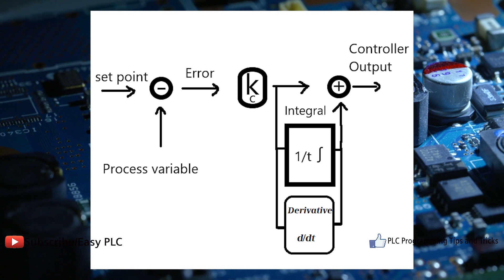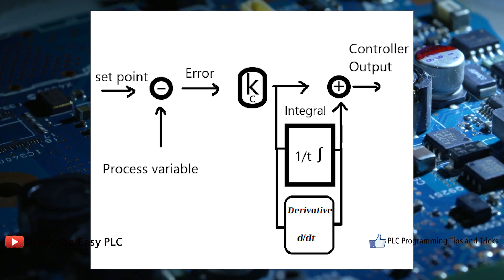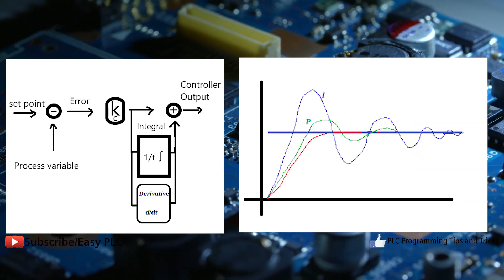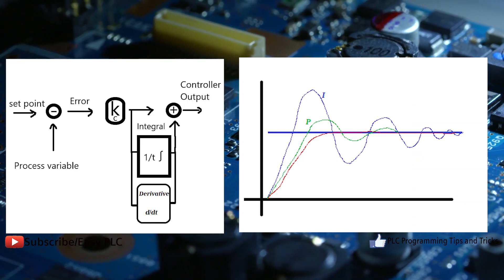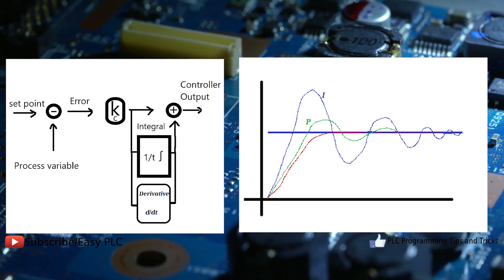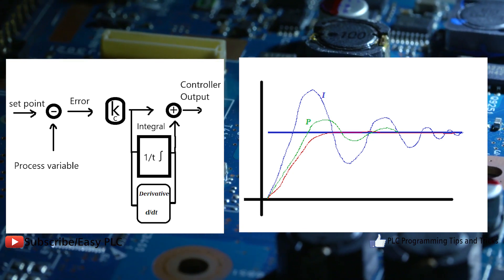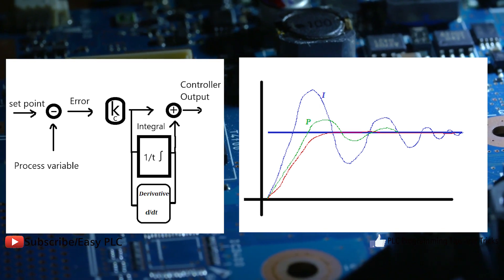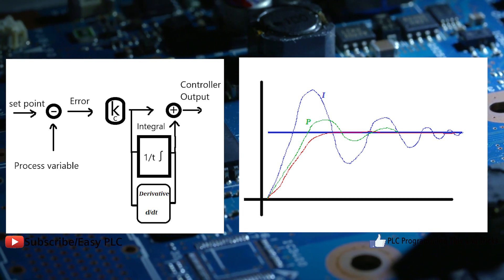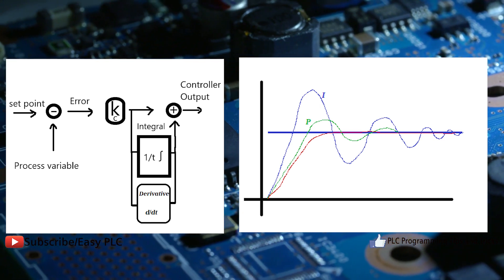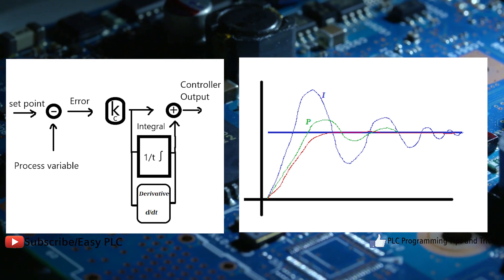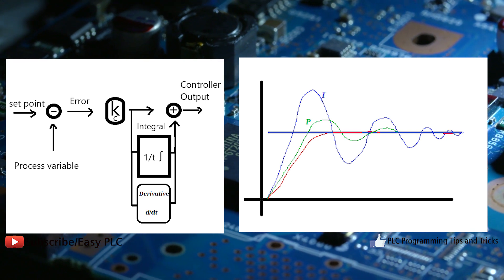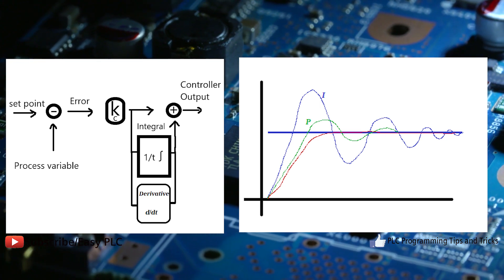D controller: I controller doesn't have the capability to predict the future behavior of error, so it reacts normally once the setpoint is changed. D controller overcomes this problem by anticipating future behavior of the error. Its output depends on rate of change of error with respect to time, multiplied by derivative constant. It gives the kickstart for the output thereby increasing system response.